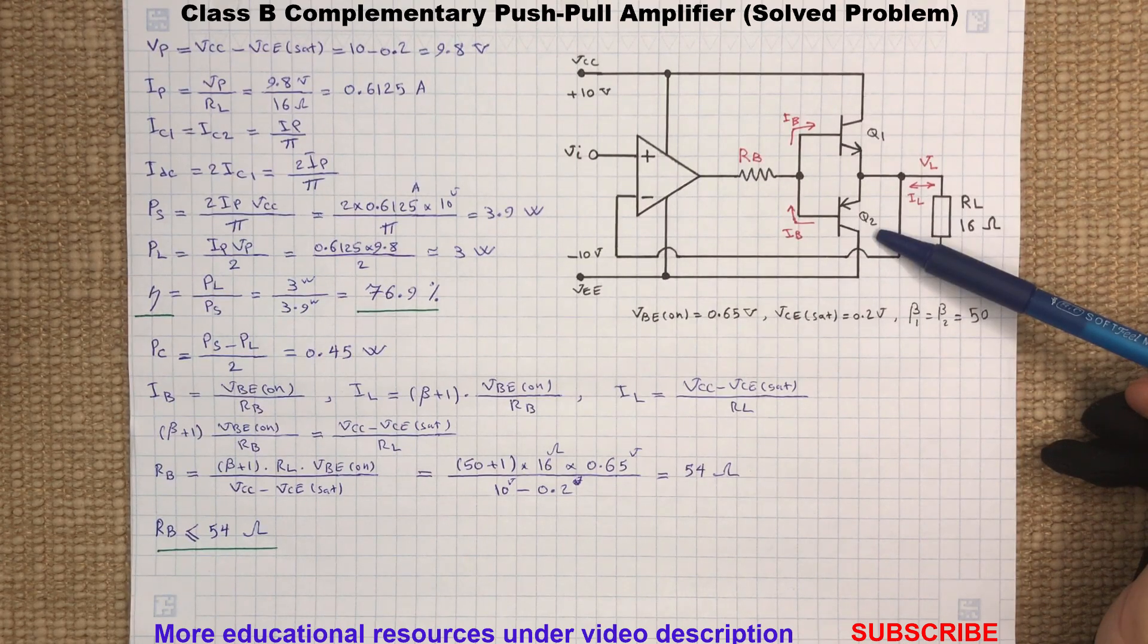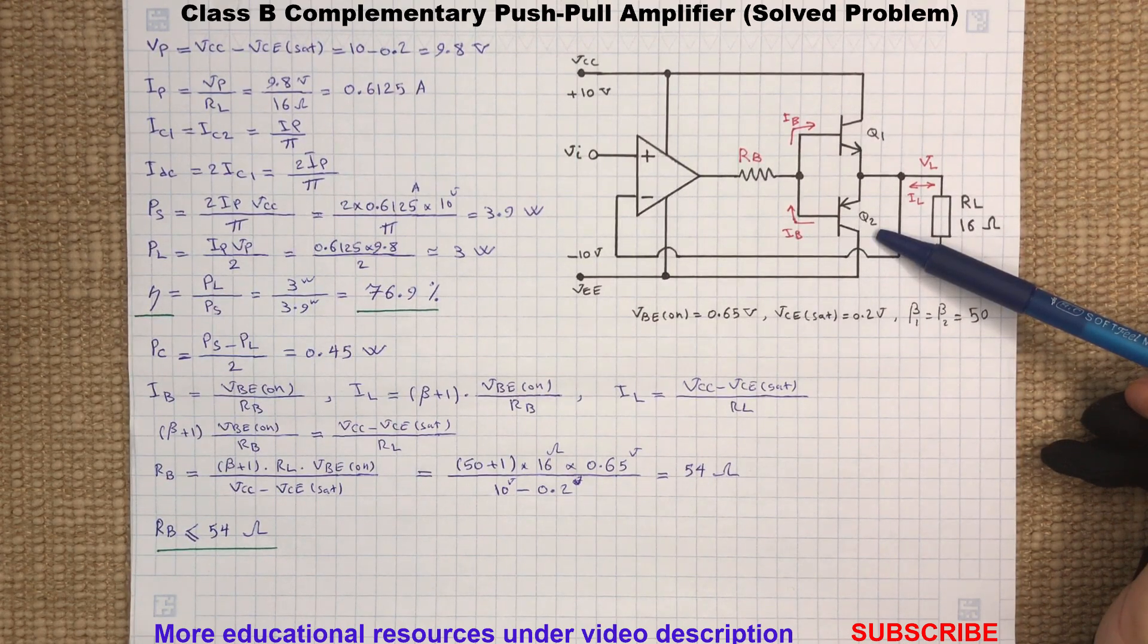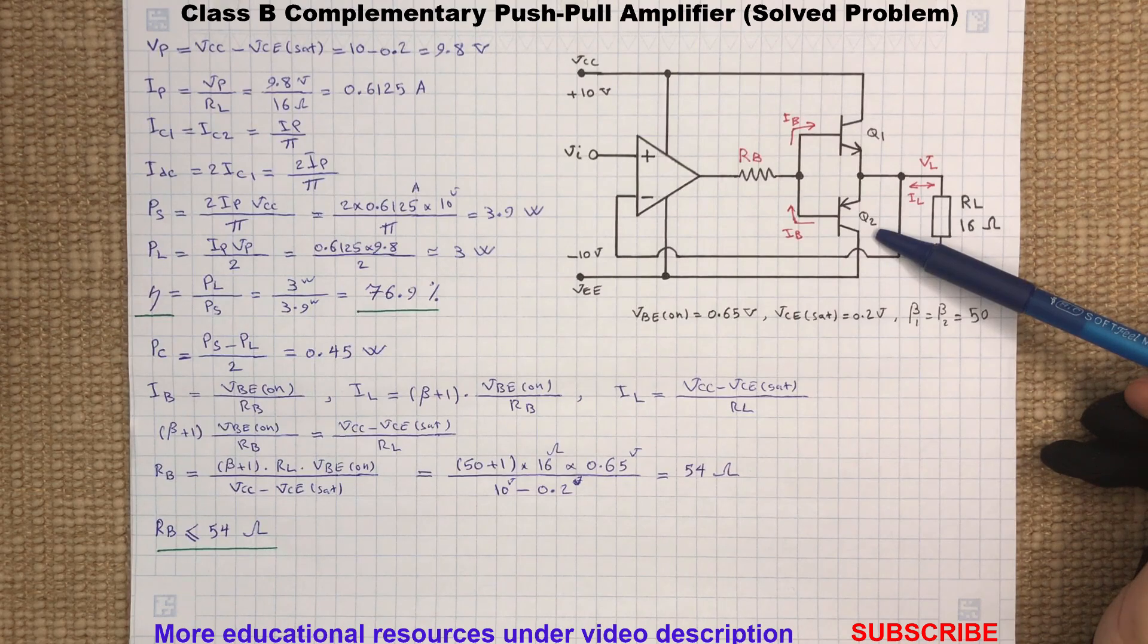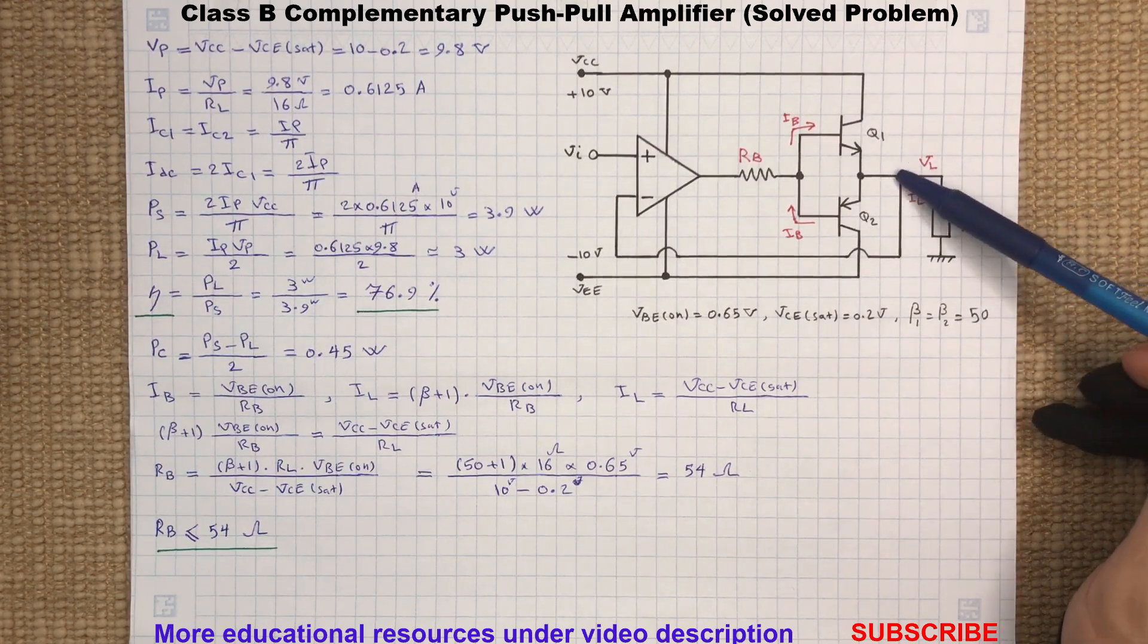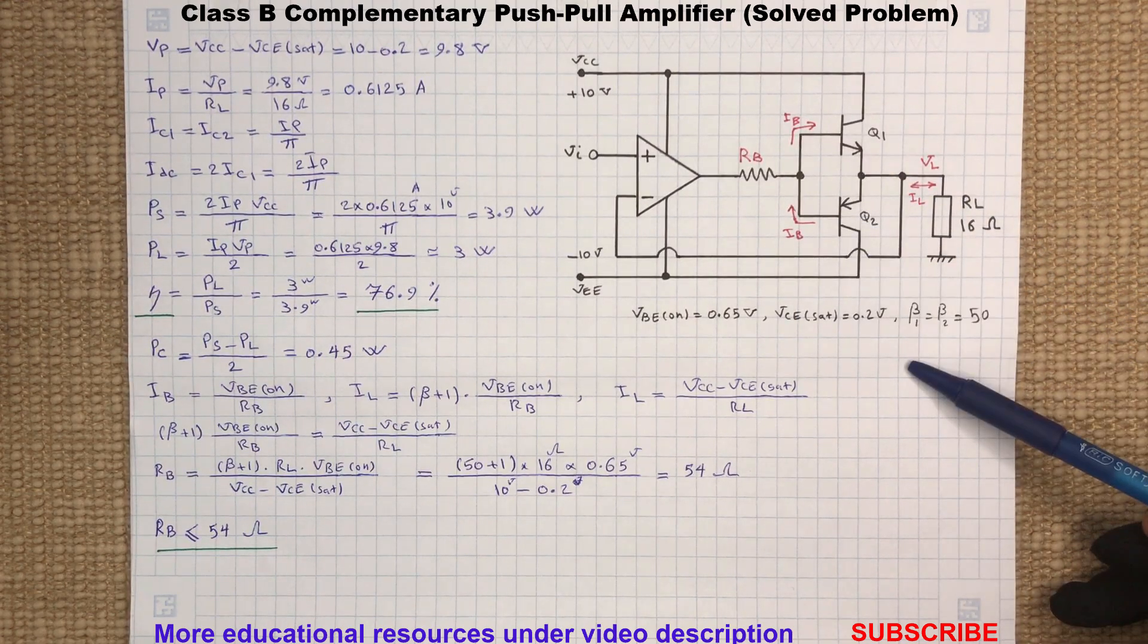Q2 operates as an emitter follower and it pulls the current from the load to the emitter.